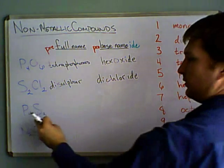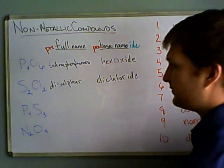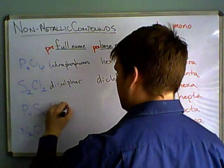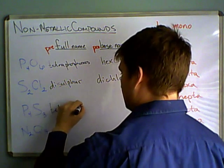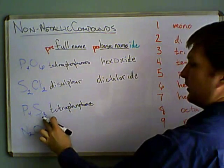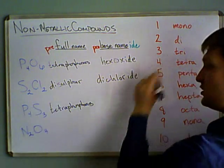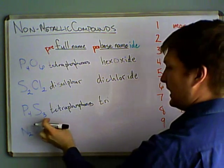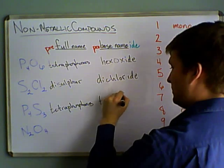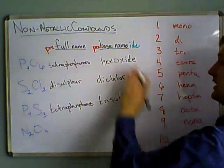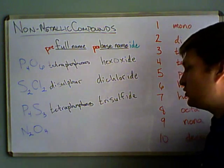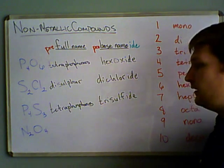Now, here we go, another phosphorus, again, tetraphosphorus, and here we go, so we have three is tri, we have tri, and then sulf, because that's the base, the base name, and then we drop the ending and add -ide. So that's tetraphosphorus trisulfide.